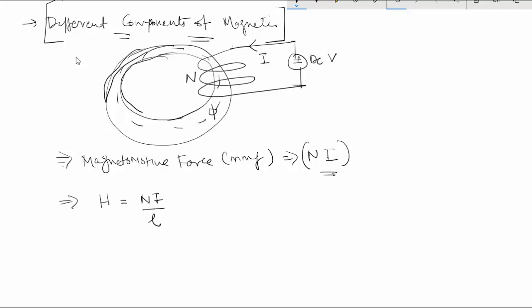If L is the length of this solenoid or the length of the path of this flux, then the magnetic field intensity will be given by this.